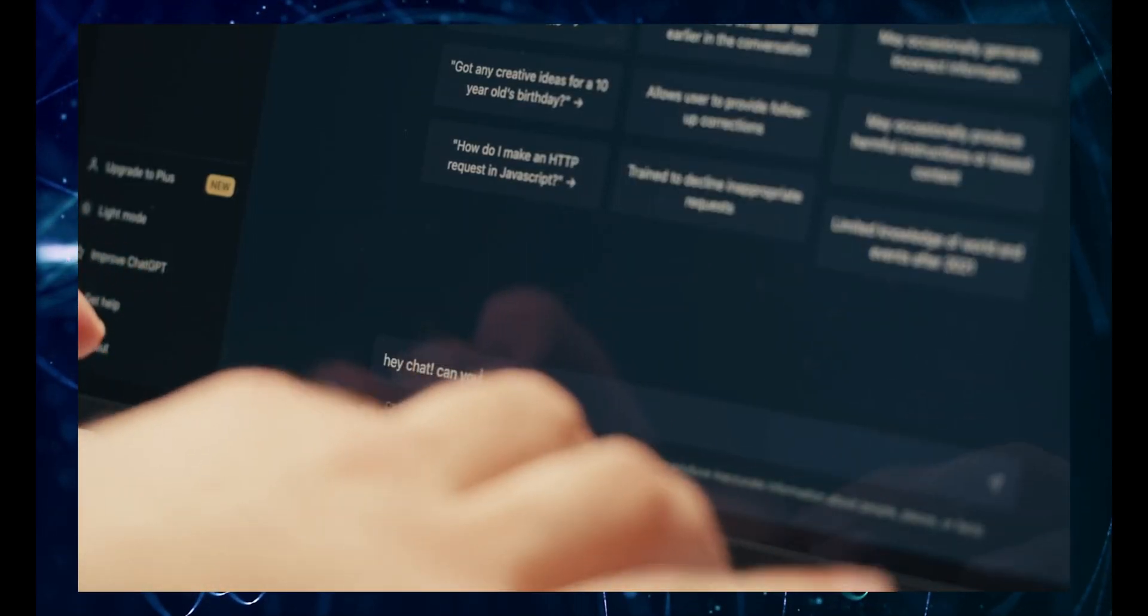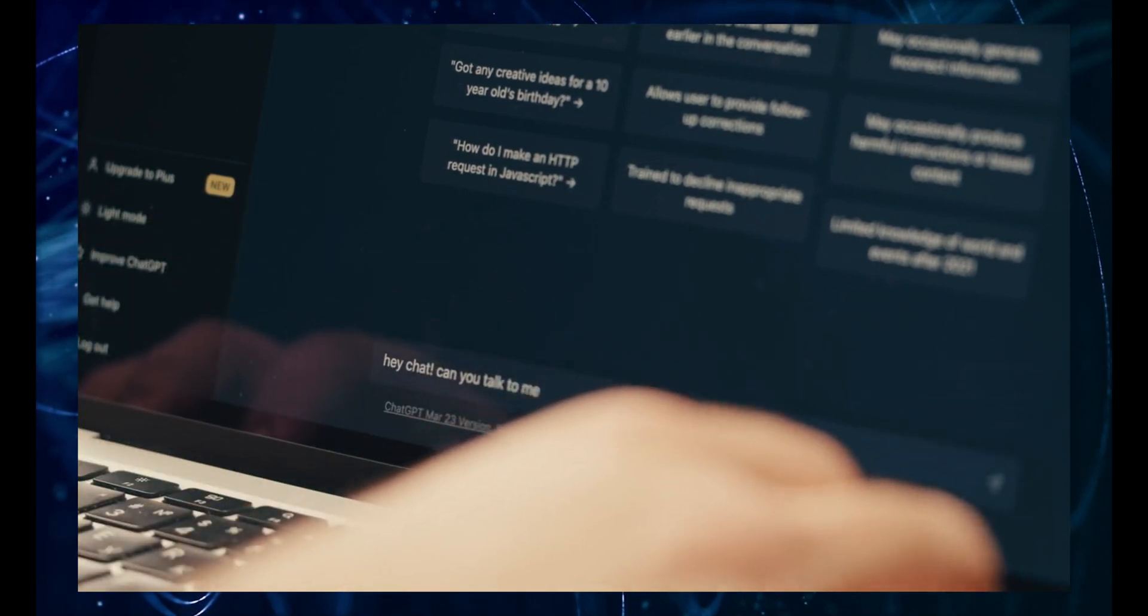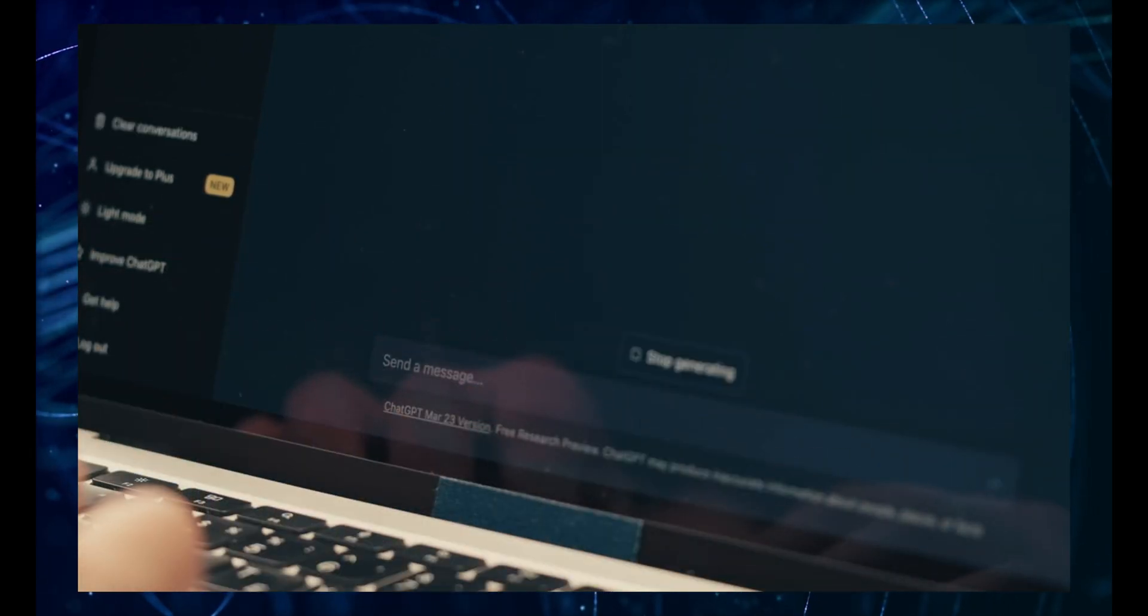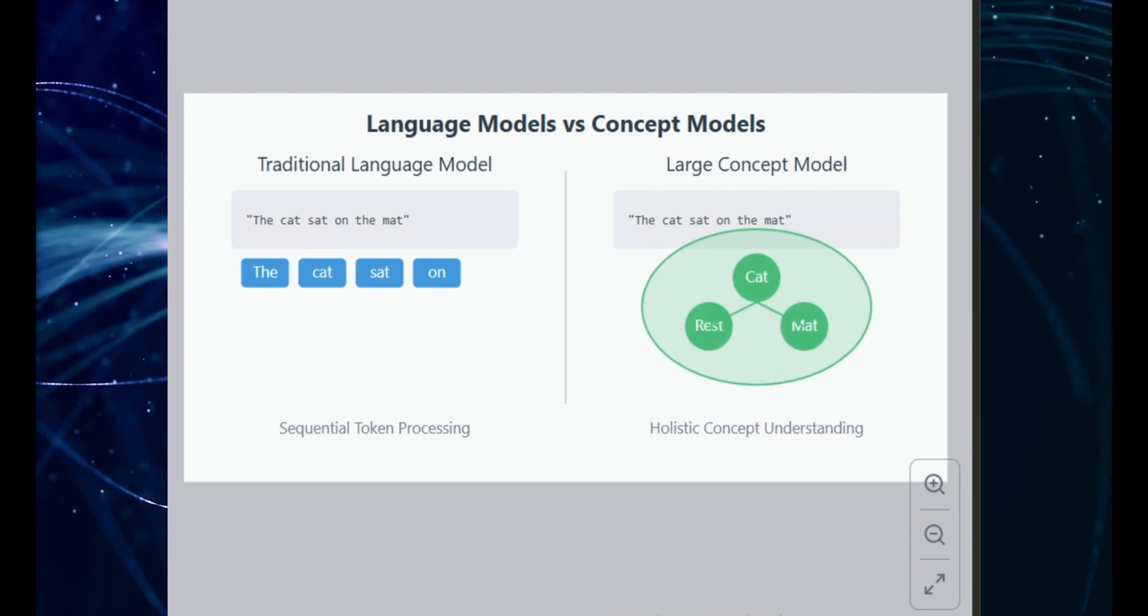So right now, language models like ChatGPT, Claude, or other AI assistants, they basically work on a word-by-word basis, or sometimes even smaller chunks of words. They're basically like super-powered autocomplete systems.